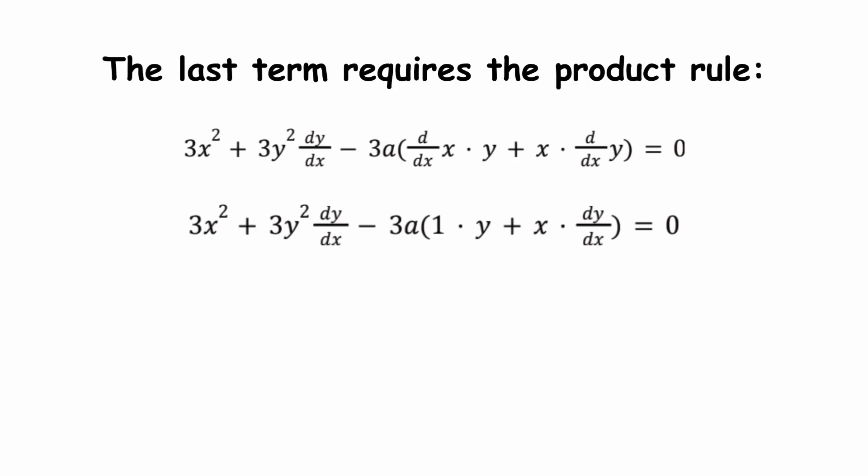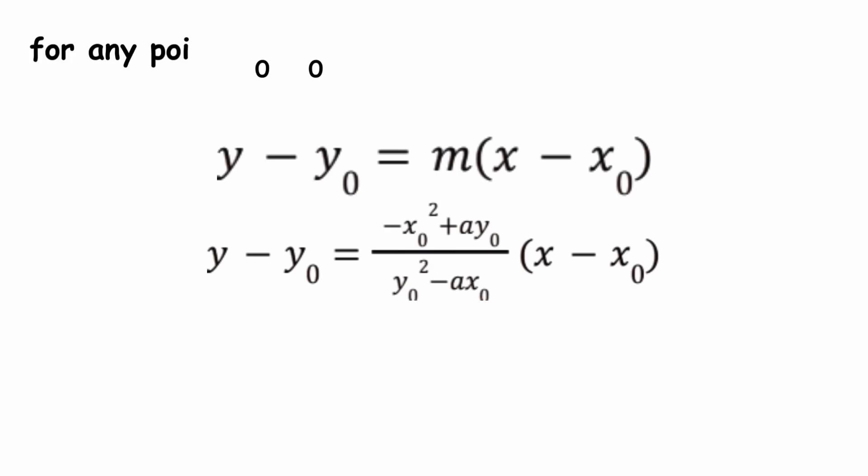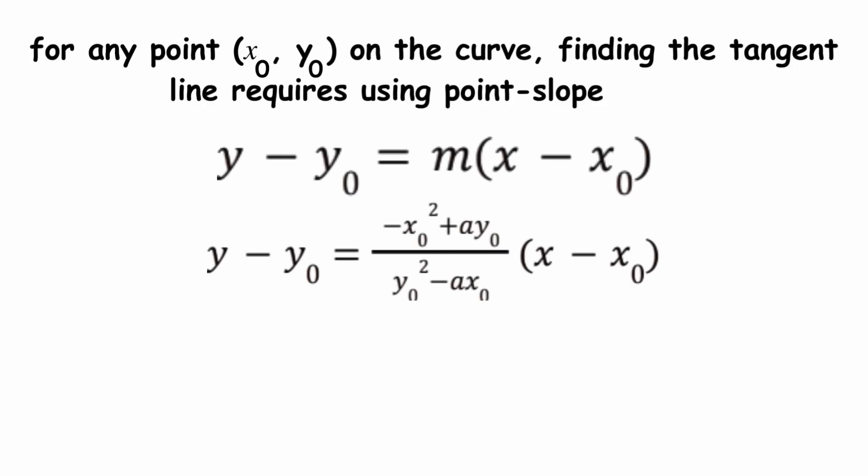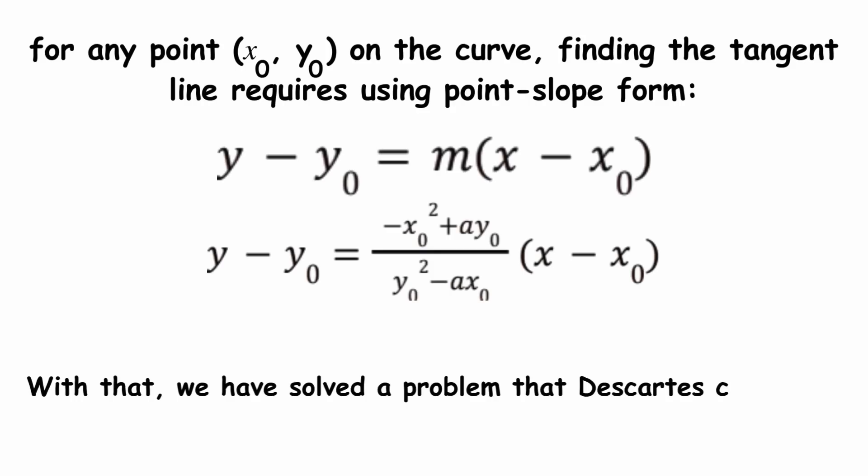With all the calculus out of the way, all we need is some algebra to solve for dy dx. Now, for any point on the curve, finding the tangent line requires using point-slope form. With that, we have solved a problem that Descartes could not.